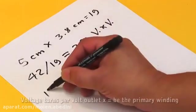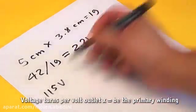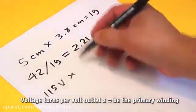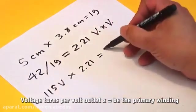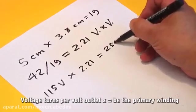We take the constant 42 and divide it by 19 for 2.21 turns per volt. As in the public grid of our country, we have a voltage of 115 volts, multiplied by the number of turns per volt. Now we know how many laps are needed in the primary winding.